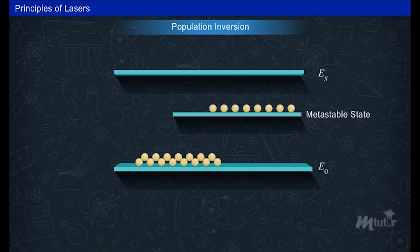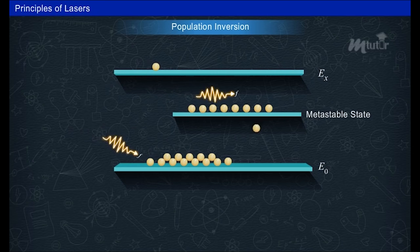Population inversion: Generally in any atomic system, the number of atoms in the ground state is more than that in the excited state. This is because of the tendency of electrons to stay in the ground state.